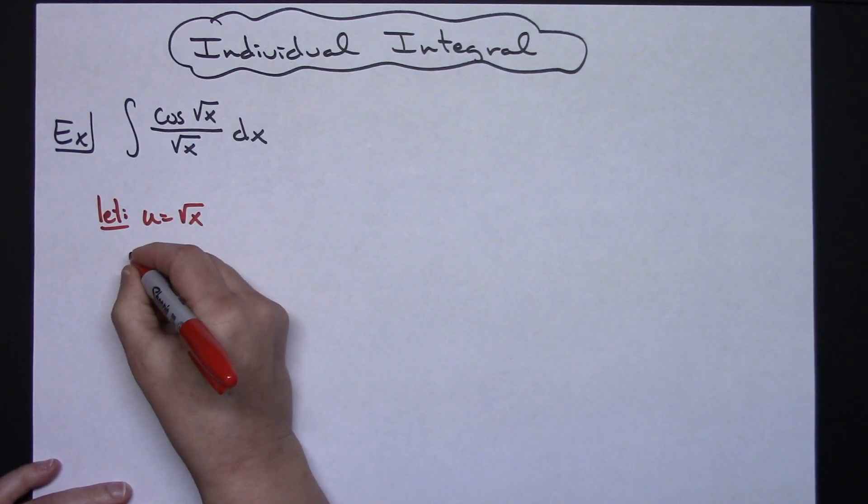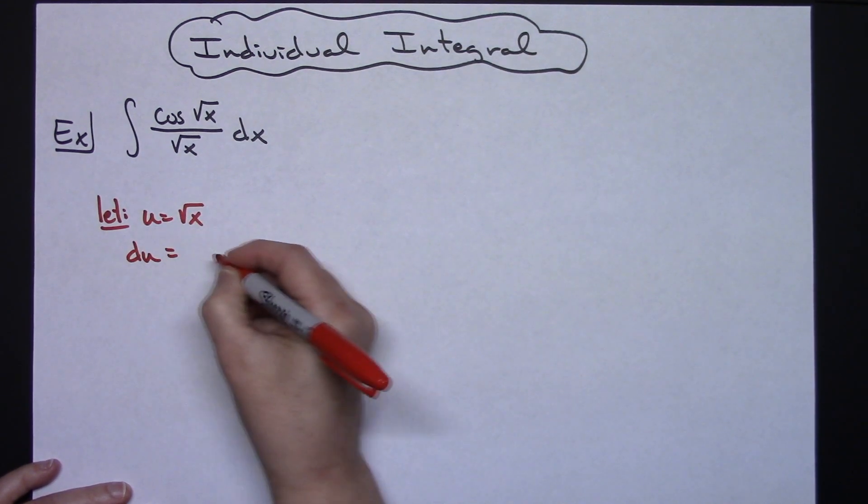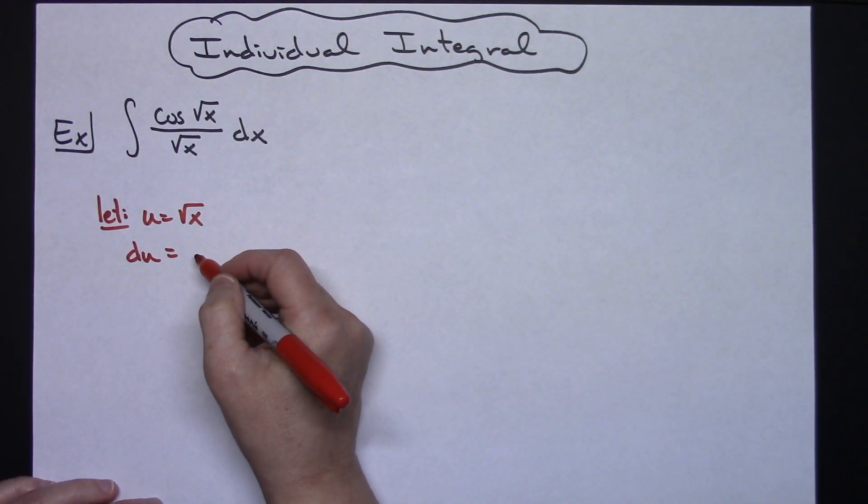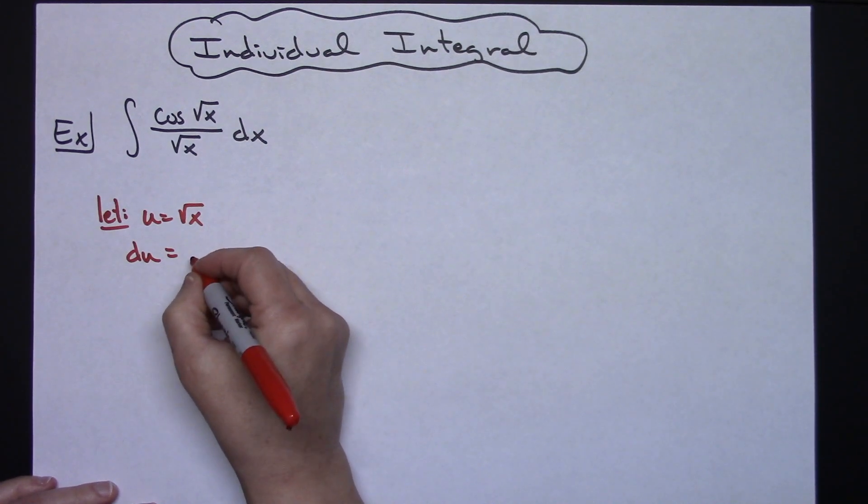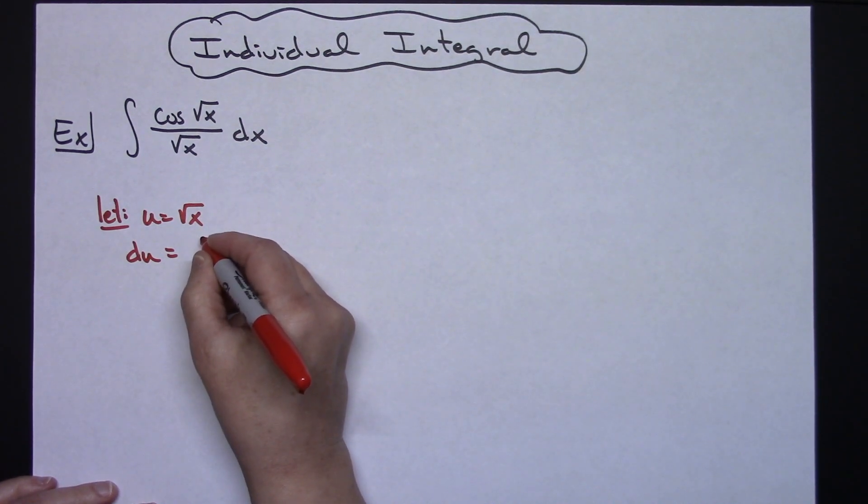We're going to take the derivative of both sides so du is equal to, if you need to calculate that derivative by hand so that you can verify what it is go ahead and hit pause in the video. I'm just going to go ahead and give you that derivative, it's pretty straightforward.